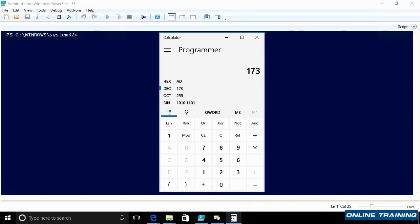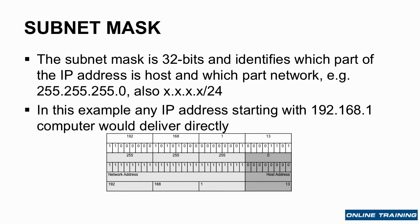But how does it know which bit is the house number and which bit is the street — i.e. the host address and the network address? It's all based around something called the subnet mask. When you talk about IP, you'll often hear someone say the IP address is 10.7.173.10, subnet mask 255.255.255.0. The subnet mask says anywhere where it is a 1, it means it's part of the network address. Where it's a 0, it's the host address — i.e. the house number.